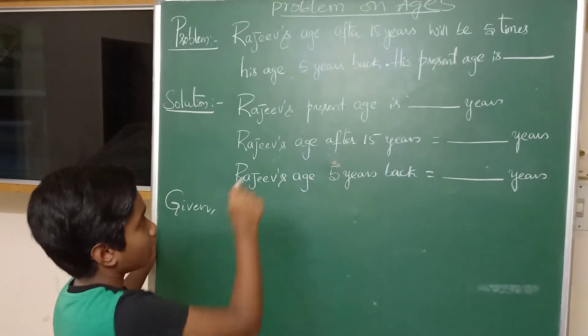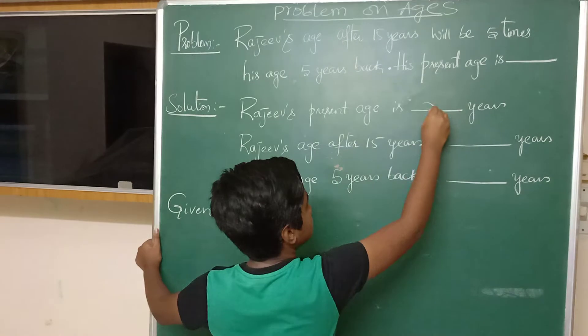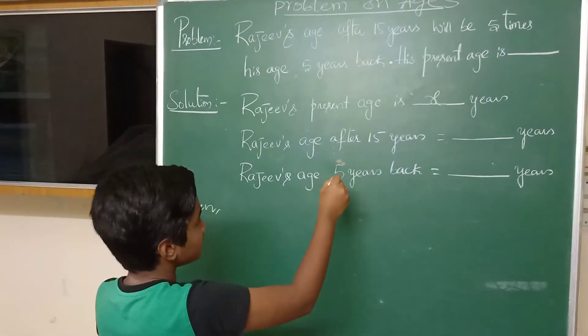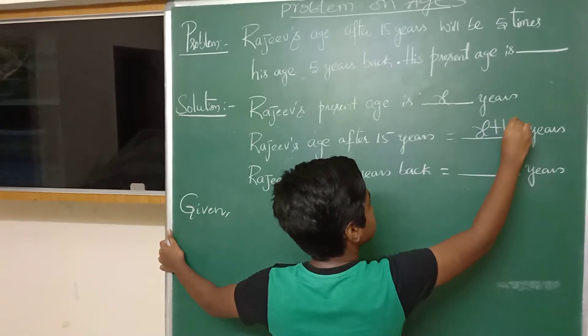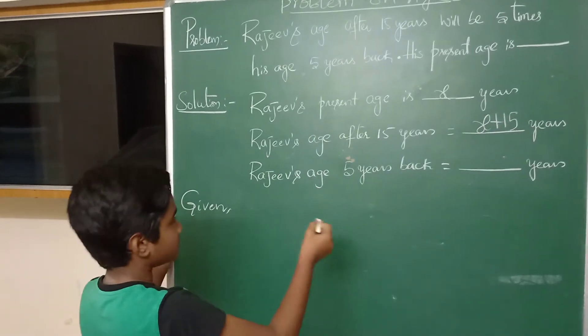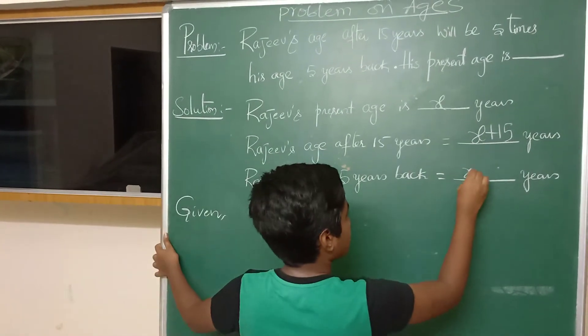Let us consider Rajiv's present age is X years. Rajiv's age after 15 years is X plus 15. Rajiv's age 5 years back is X minus 5.